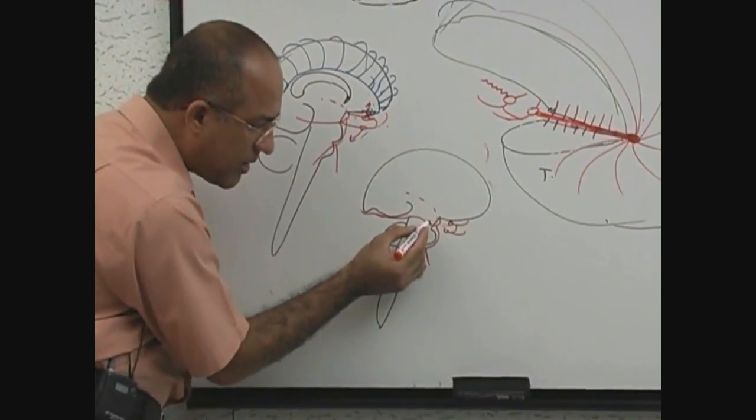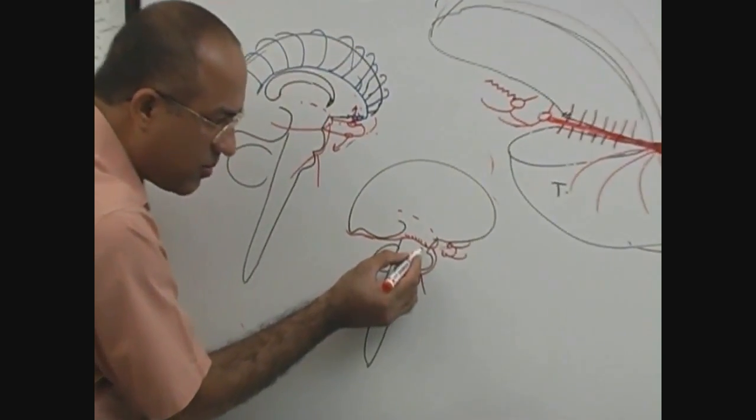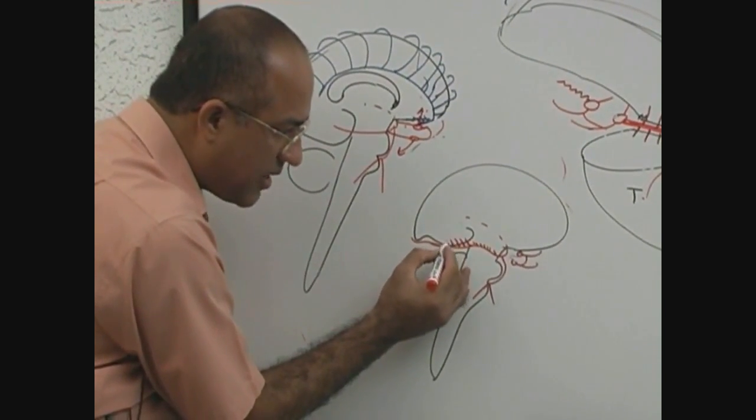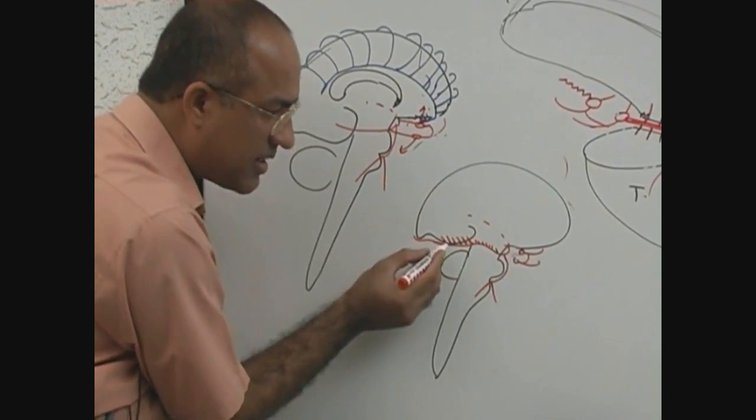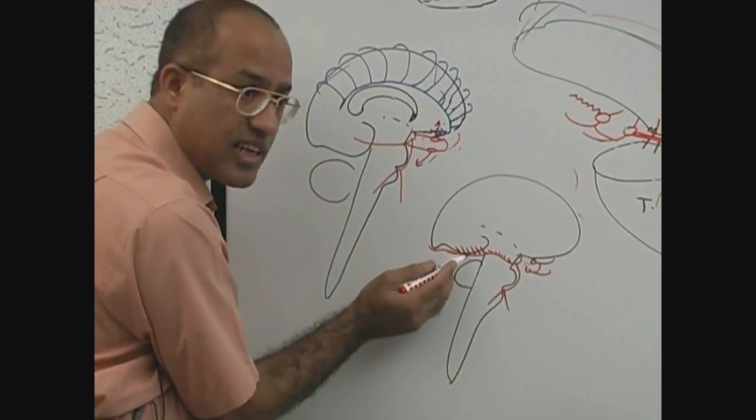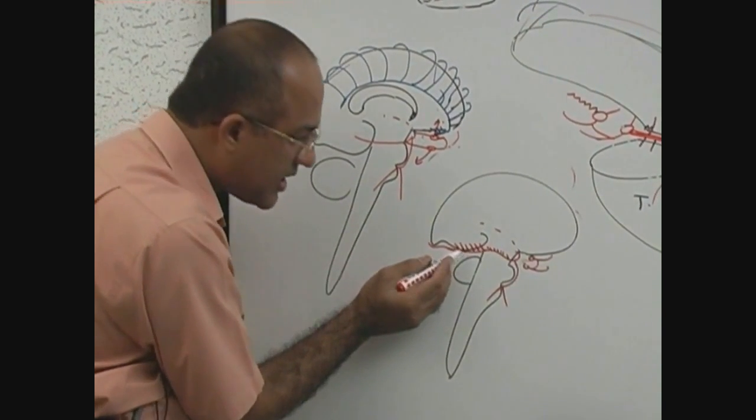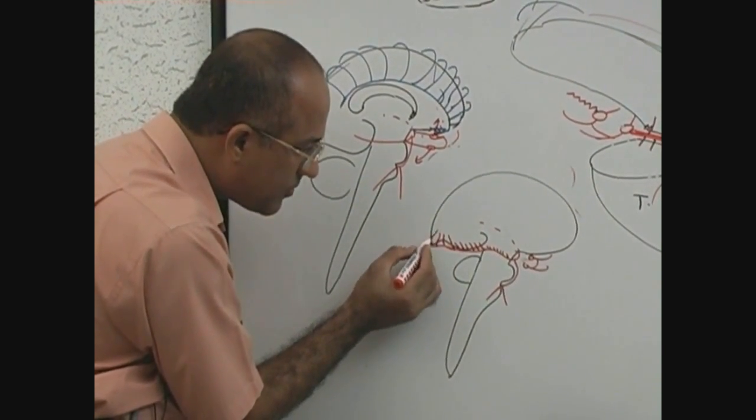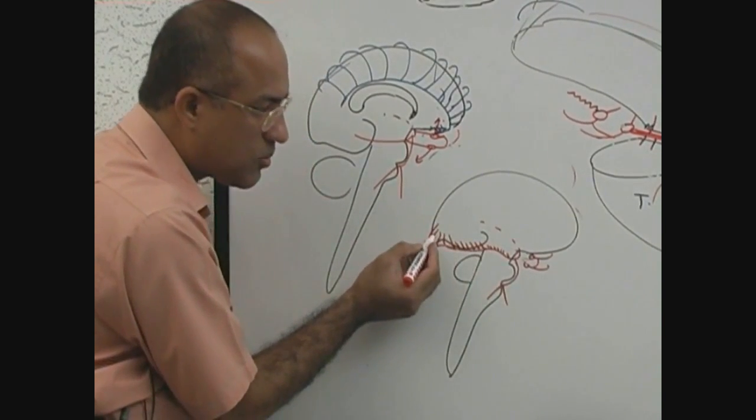Now this will supply, posterior cerebral, what is this? Midbrain. Also it will supply the temporal lobe from temporal lobe inferior area and from medial area, inferior area and occipital lobe. What is this? Posterior cerebral.